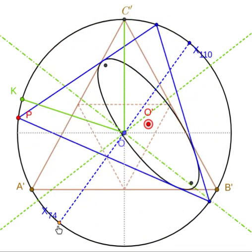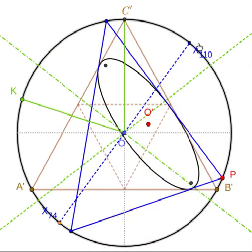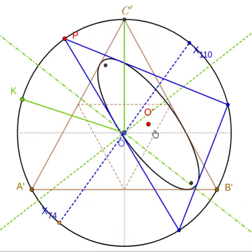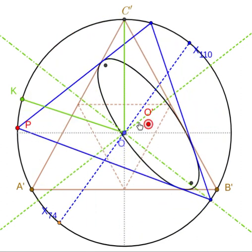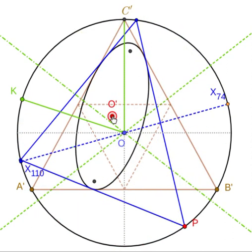Reminding the viewers that X110 over here is the antipodal point on the circumcircle of X74. So I picked a particular caustic center and I got a particular stationary axis.